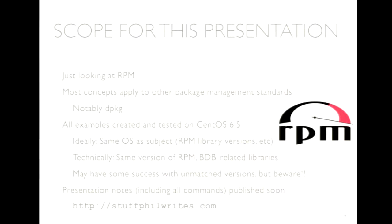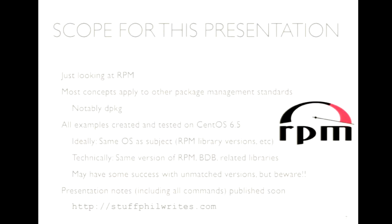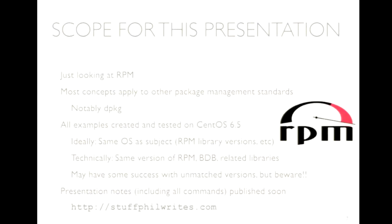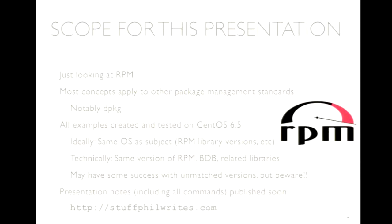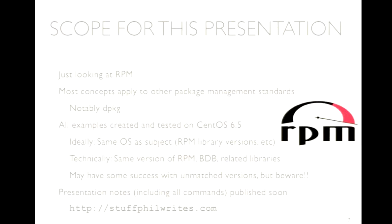In the scope of this talk, we're just going to look at RPM, but most of these concepts apply to other package management standards. The most robust is going to be the Debian packaging system, DPKG. Between RPM and the Debian/Ubuntu packaging systems, those provide us the most opportunities for forensic artifacts. All the examples you see here were tested on CentOS 6.5. When doing this kind of work, it's important to match your examination or analysis system to the distribution of the subject system.